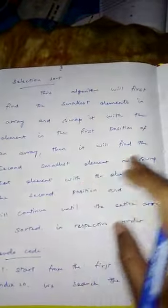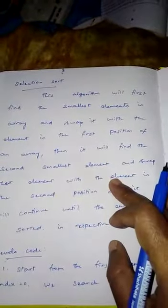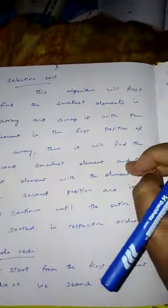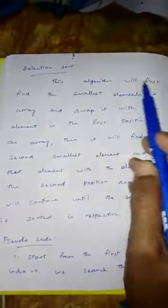Next we go to selection sort. In selection sort, first write all the numbers. Among all the numbers, take the first smallest number and keep it in the first place. Then, from the remaining elements except the first, take the second smallest element and keep it in the second place. Then take the third smallest element and keep it in the third place, and so on. We are selecting the smallest element and placing it in the required position — that is selection sort.